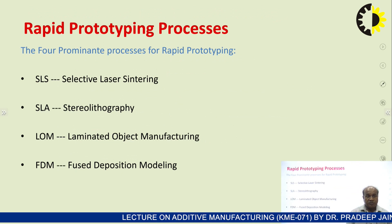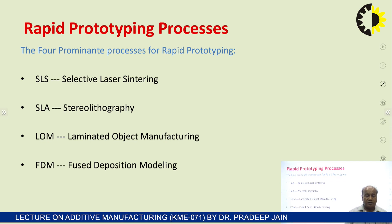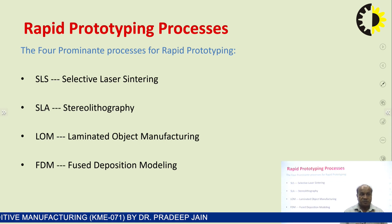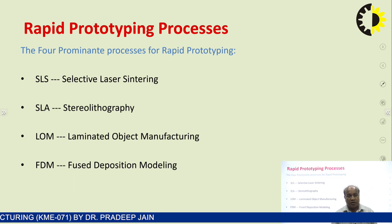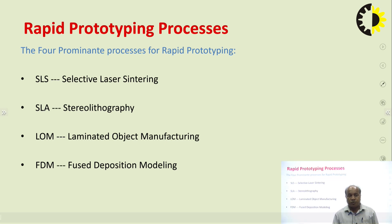On the basis of sophistication, the four prominent processes of prototyping are: Selective Laser Sintering (SLS) technology, Stereolithography (SLA) technology, Laminated Object Manufacturing (LOM) technology, and Fused Deposition Modeling (FDM).